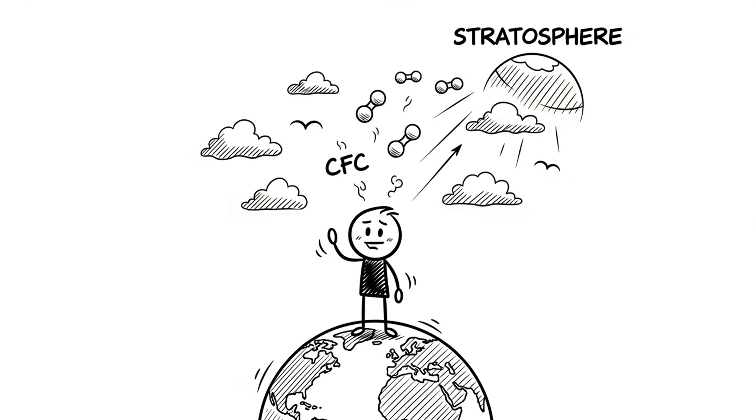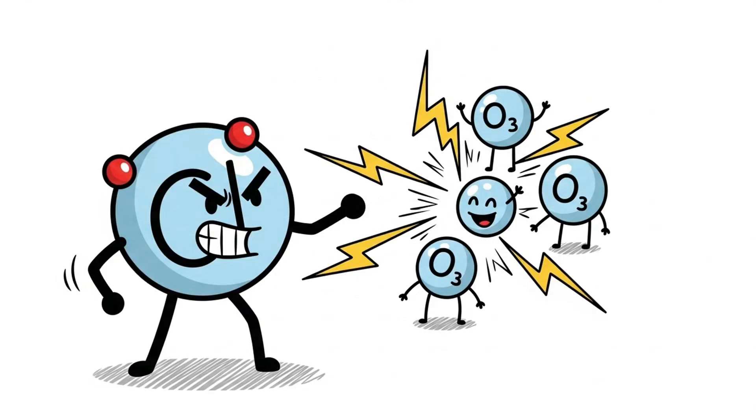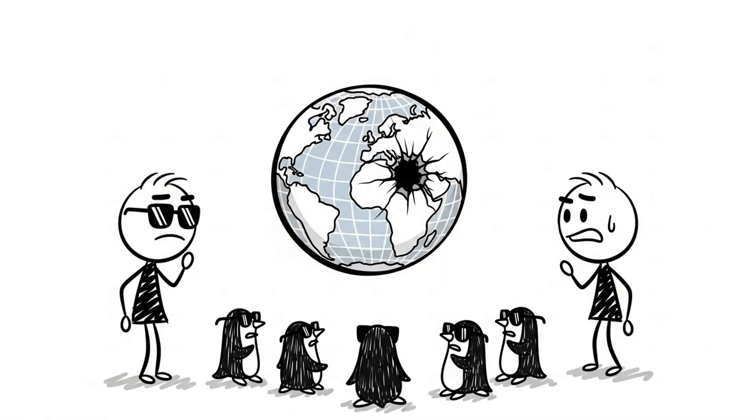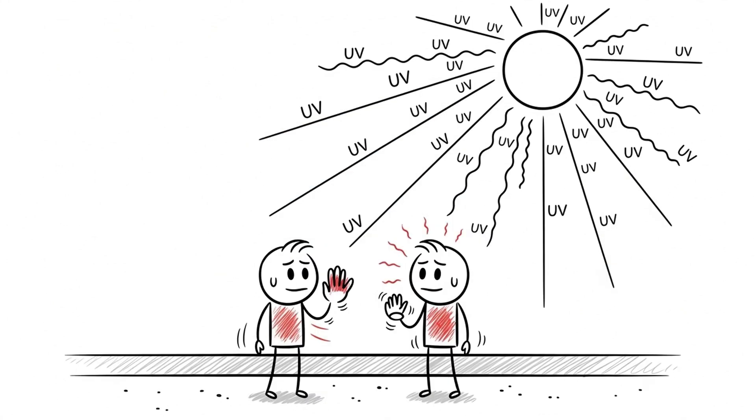But CFCs had a hidden problem. When released, they floated up, way up, into the stratosphere. There, sunlight broke them apart. And the chlorine inside? It began breaking down ozone molecules. The ozone layer isn't just a science buzzword. It shields Earth from the sun's harmful ultraviolet rays. By the 1980s, scientists noticed something terrifying. There was a giant hole in the ozone layer right over Antarctica. The public was alarmed. Skin cancer rates were rising. UV levels were spiking.